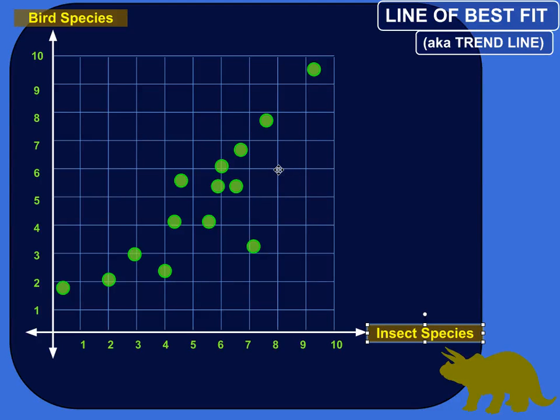All right, so lines of best fit are estimations, and they can be more or less accurate. They could more or less closely fit the actual data that you collect. But if the data you collect are kind of unruly, you could have several different lines of best fit. So, for example...